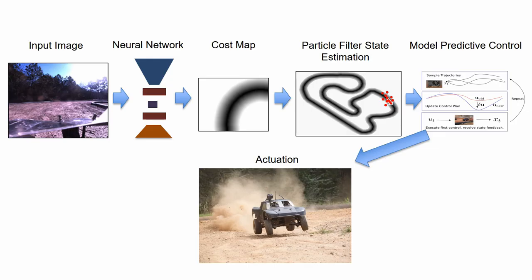In this work, we present a method for aggressive high-speed driving using monocular camera images. A local cost map is regressed from the input image, and a particle filter estimates the vehicle state.